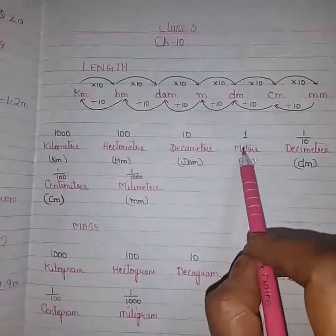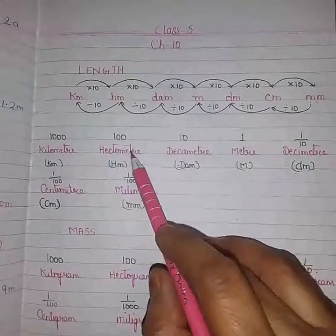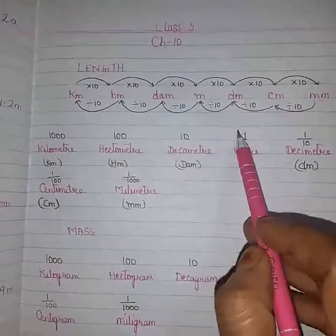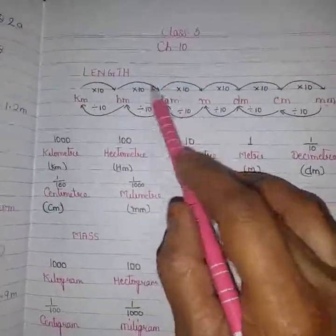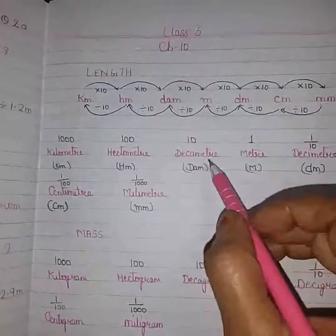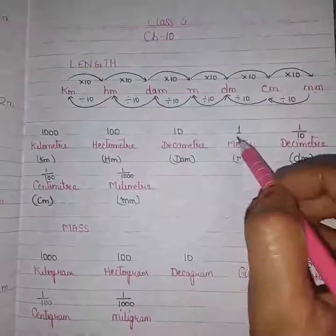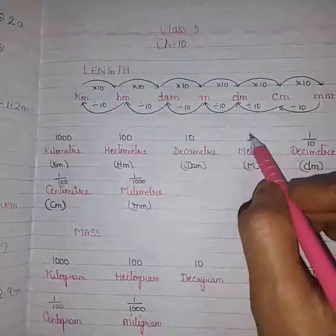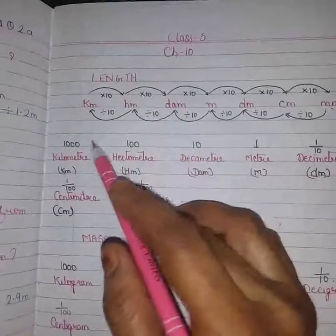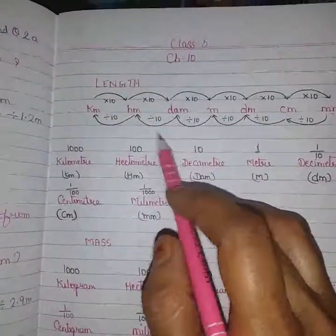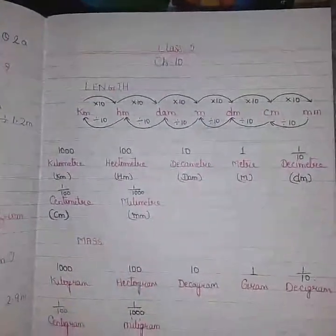If we want to convert meter to decameter, multiply by 10. Meter to hectometer, multiply by 100, because there are 2 skips — meter to decameter, and decameter to hectometer — 10 into 10 equals 100. So if we want to convert meter to hectometer, divide by 100. Meter to kilometer means we are skipping 1, 2, and 3 — that is 3 skips — so 10 × 10 × 10 = 1000. Converting meter to kilometer means divide by 1000.